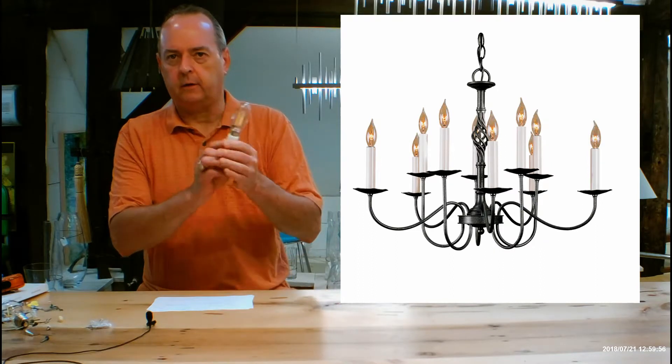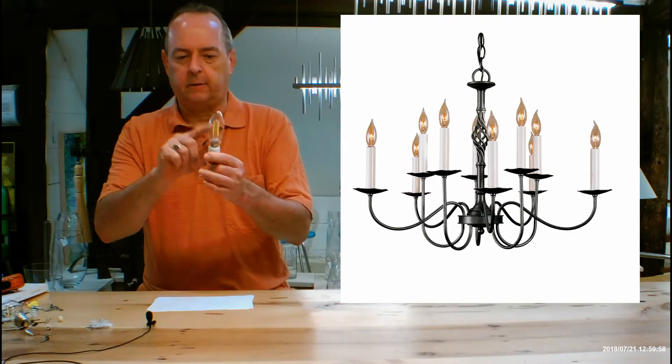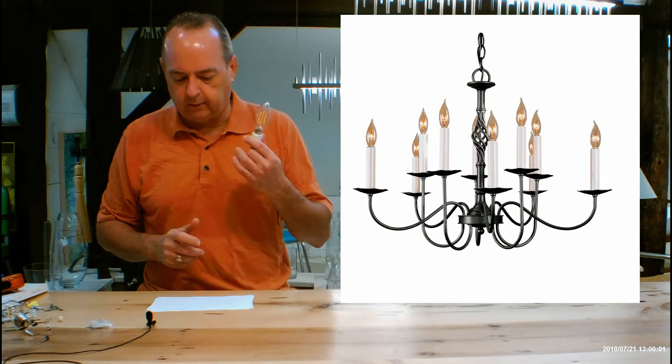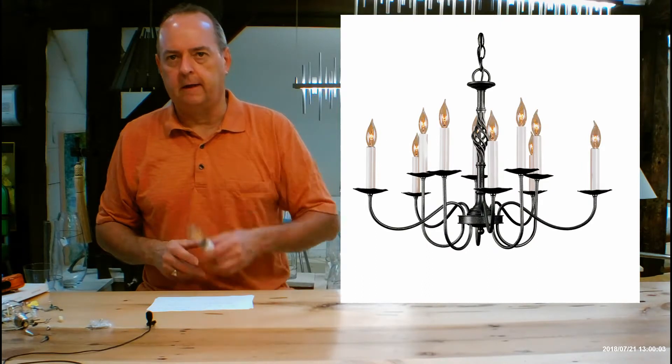It's also called the Twist Basket 10 Arms on two tiers because there are two tiers of lights. You're going to have these little candelabra-shaped things. Sometimes these can actually be a flame tip if you want. You can do LEDs or incandescent.